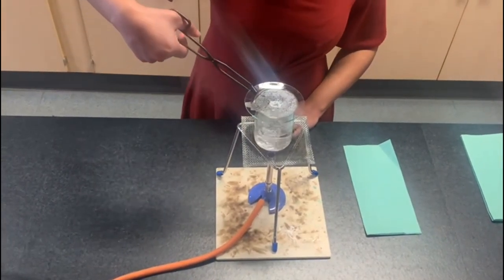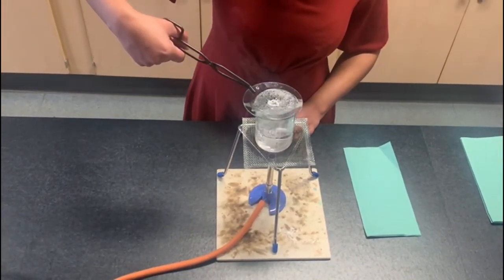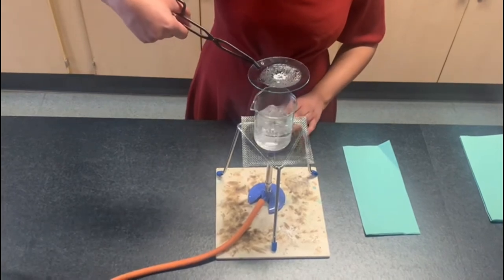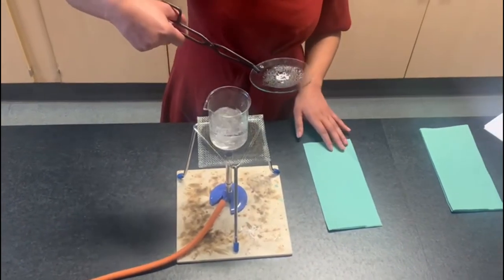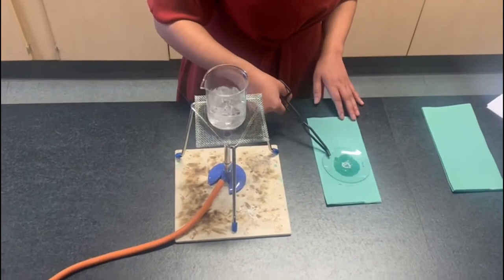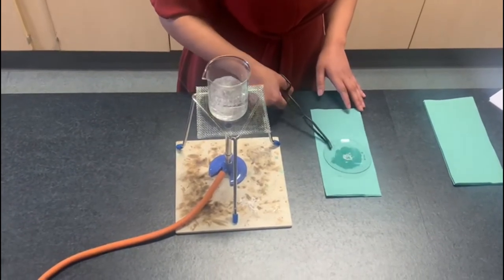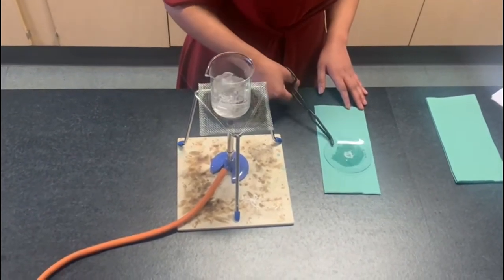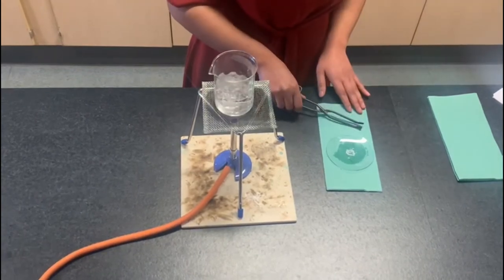Okay now that all the water has been evaporated, I'm going to take the watch glass off the water bath using tongs and place it on top of a paper towel so all the excess water can be removed before placing it on the balance.